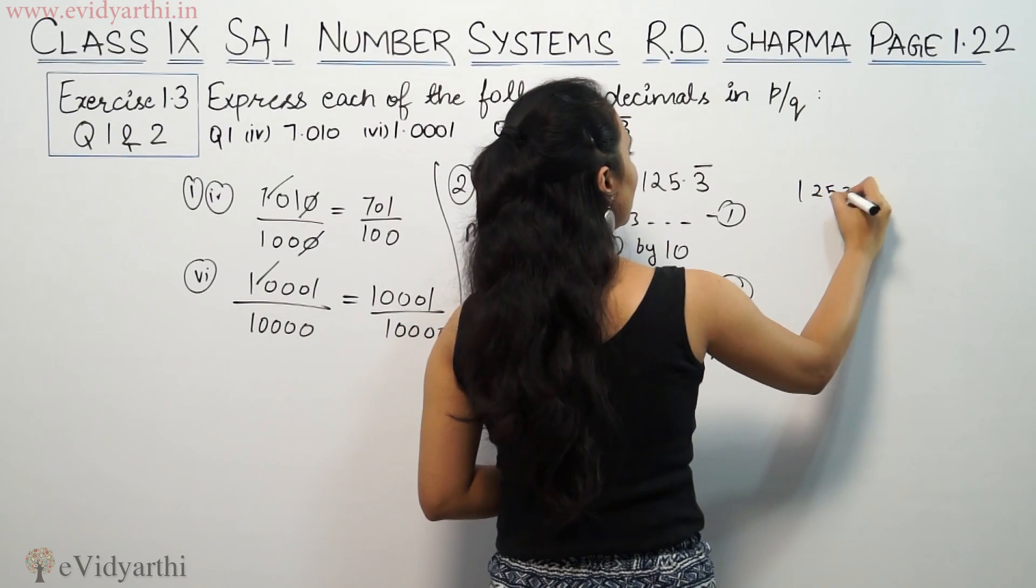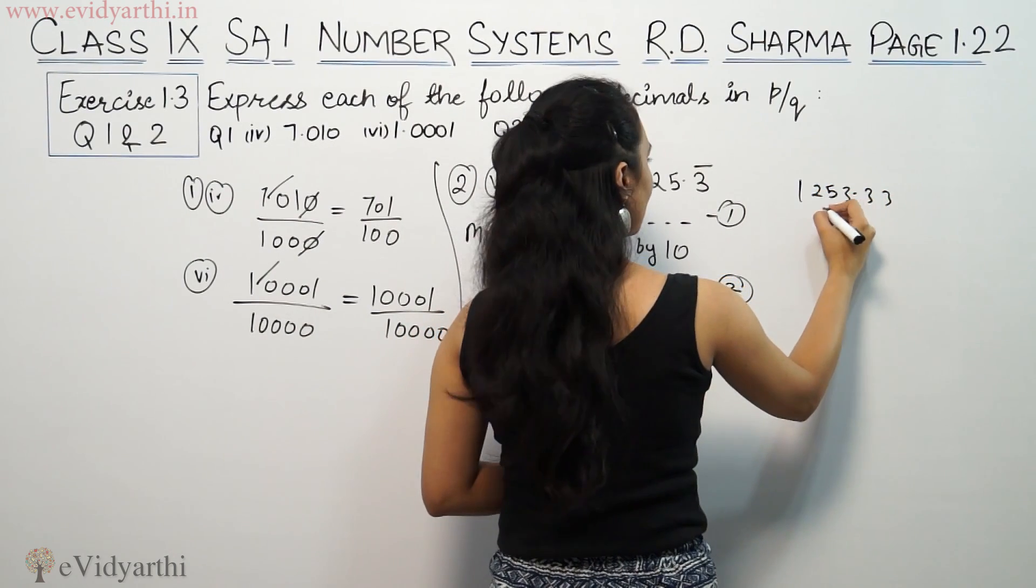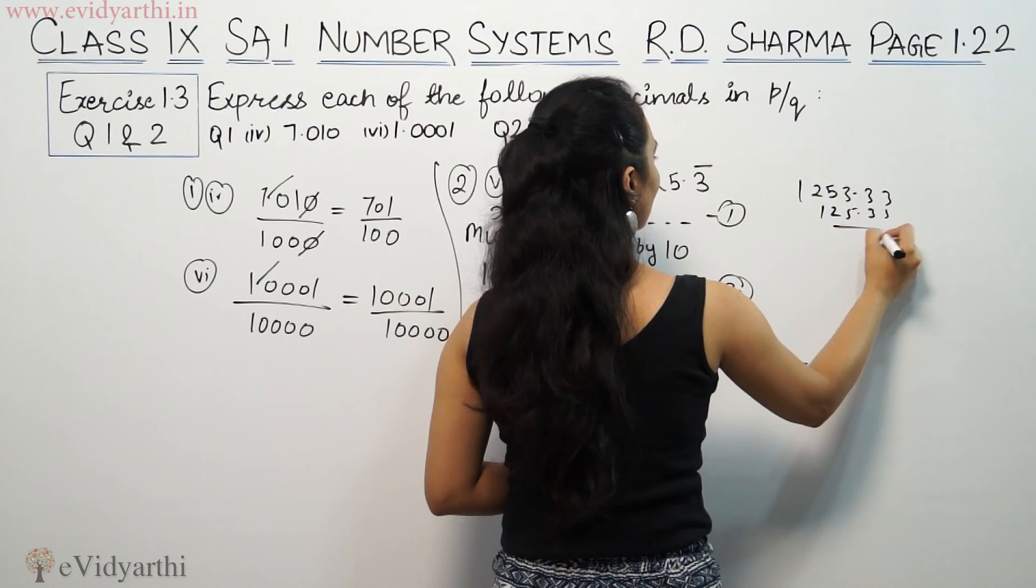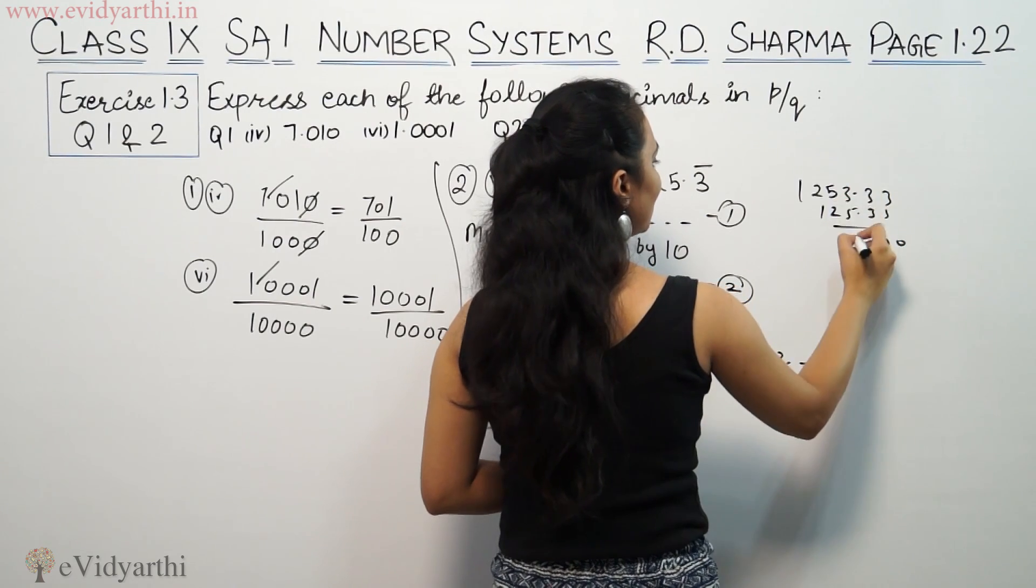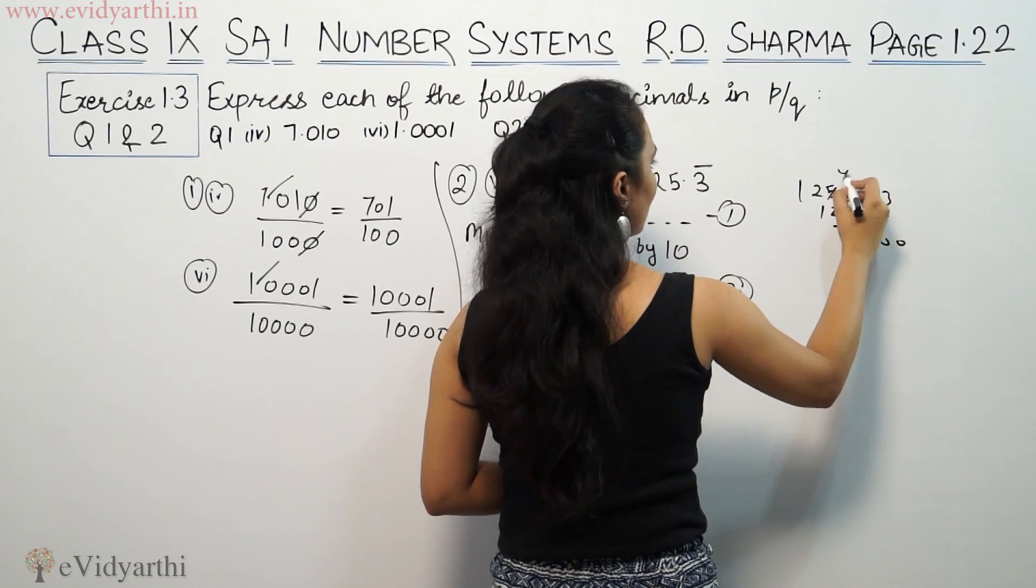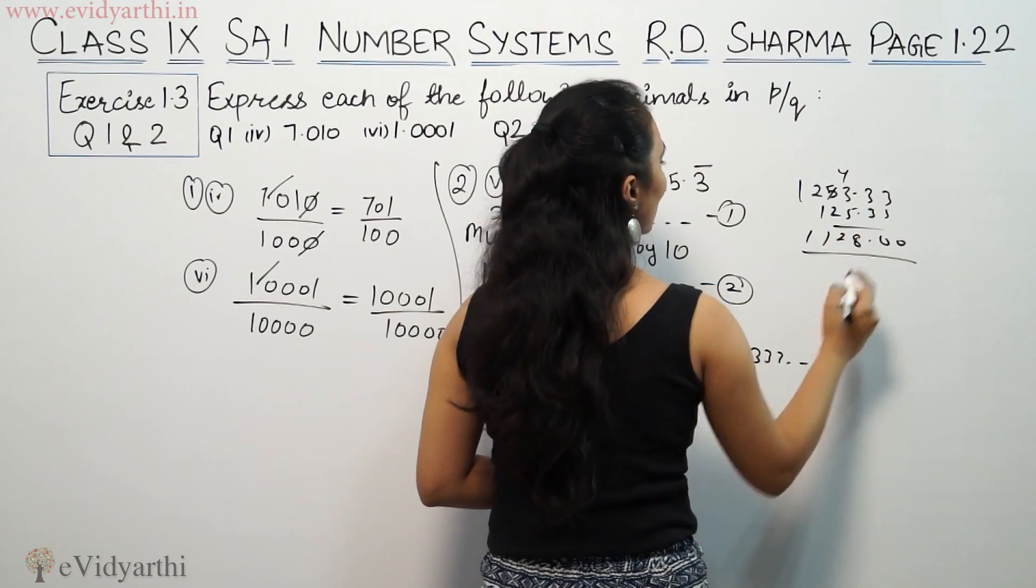1253.333 minus 125.333 - this will be 0, and the result is 1128. So 9x equals 1128.